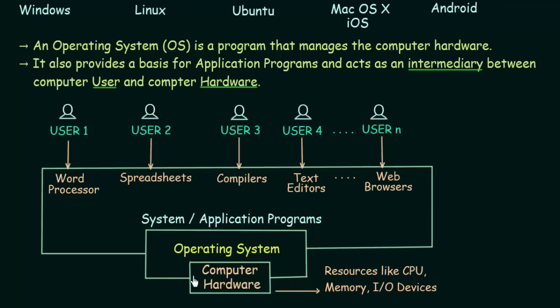We see that it is a very tedious and difficult task if there is no operating system - you have to manually tell the computer hardware each and everything. If it was like this, nobody, or at least common people, would actually use a computer system. In order to overcome this problem, what we have is an operating system. The operating system resides between the computer hardware and the users, acting as an intermediary.